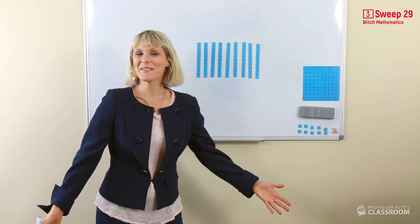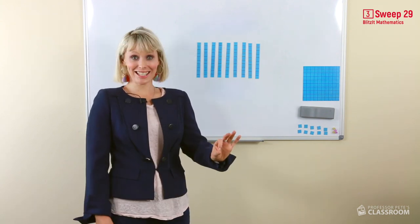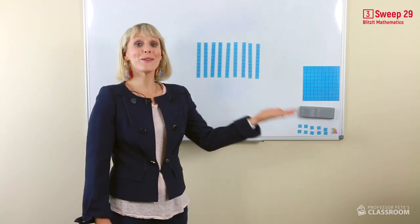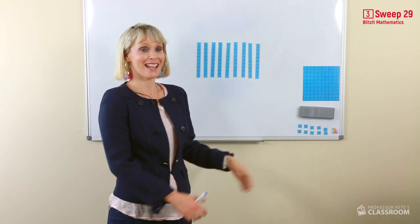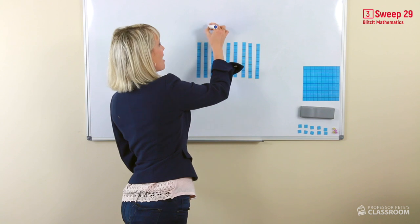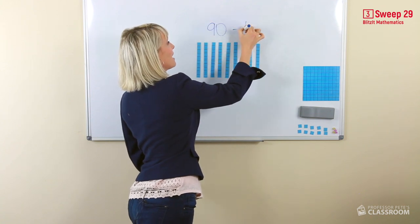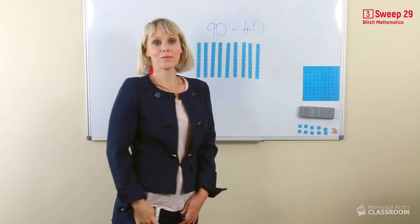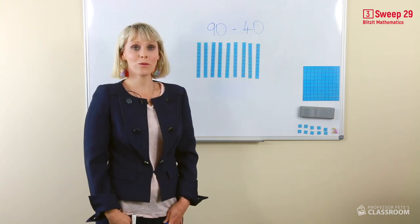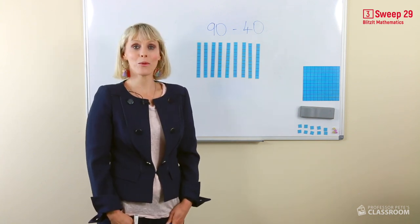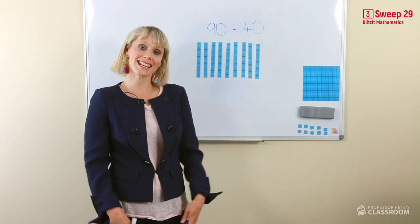Now we're going to be using our subtraction number facts to help us with taking away two-digit numbers. Here we have 90 take away 40. Again, 90 is nine tens, 40 is four tens. Nine take away four we know is five.